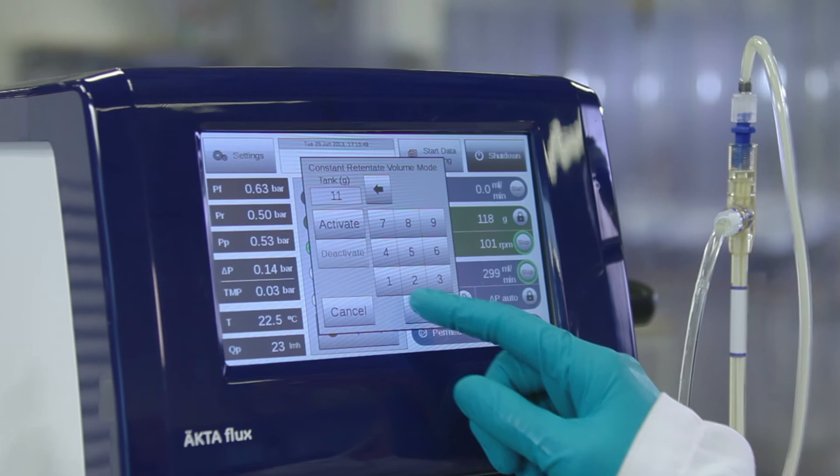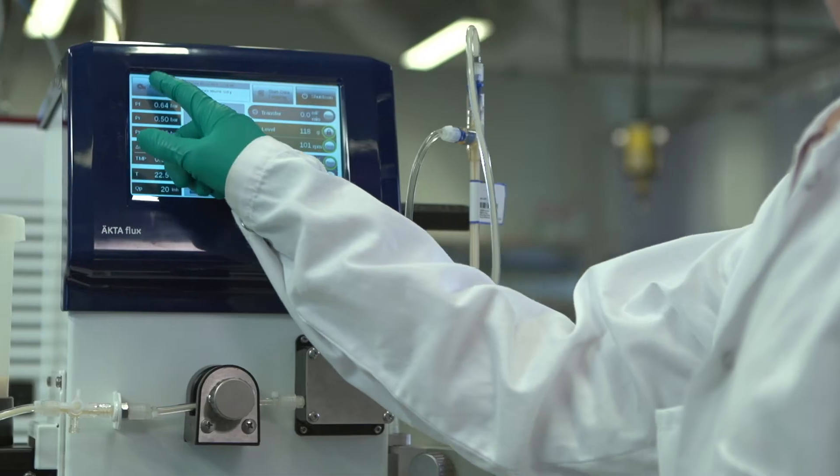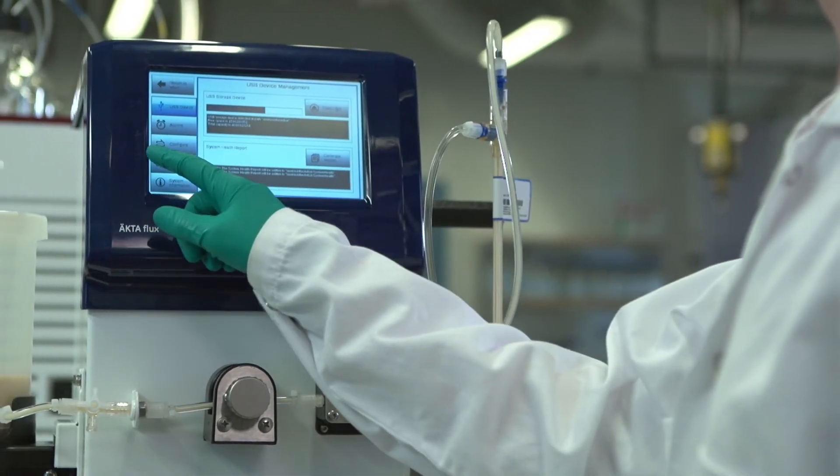Set constant retentate volume on the touch screen. Start the permeate control pump. Set the endpoint alarm for low tank level to final volume.